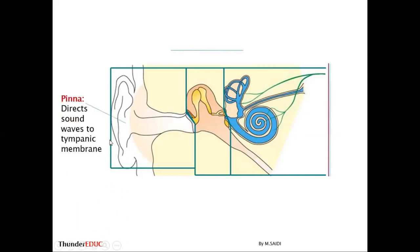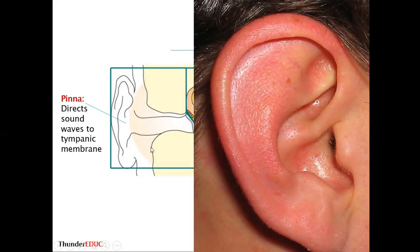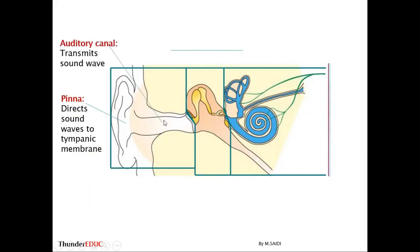The first part is the pinna, which is the outside part of the ear. It collects and directs sound waves to the tympanic membrane. It has curves so that it can collect sound from any direction, and then it sends the sound to the tympanic membrane via the auditory canal.